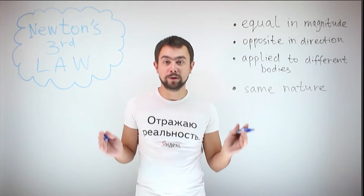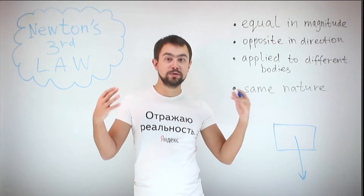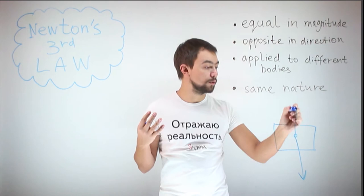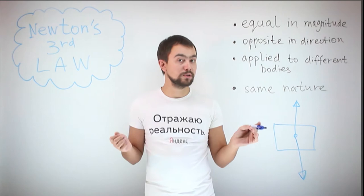A student draws a box which rests on a table. He draws the weight of the box, and then he says: according to Newton's third law, there must be an equal and opposite reaction force. He draws the normal reaction of the table, and says these two forces are equal, thus the box is stationary. Well, the box is stationary, but not because of Newton's third law.